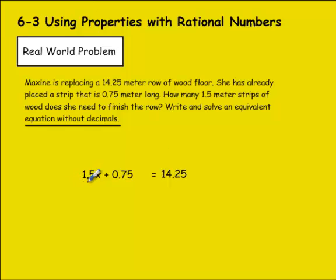So when I multiply times 100, I move that decimal over twice. So I have 150x now plus 0.75, move it over twice, that would be 75 equaling 14.25, move it over twice, that would be 1,425. So this would be my new equation without decimals.